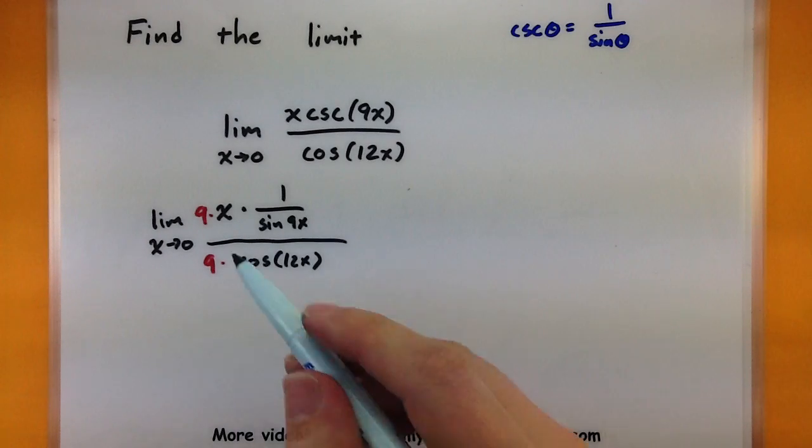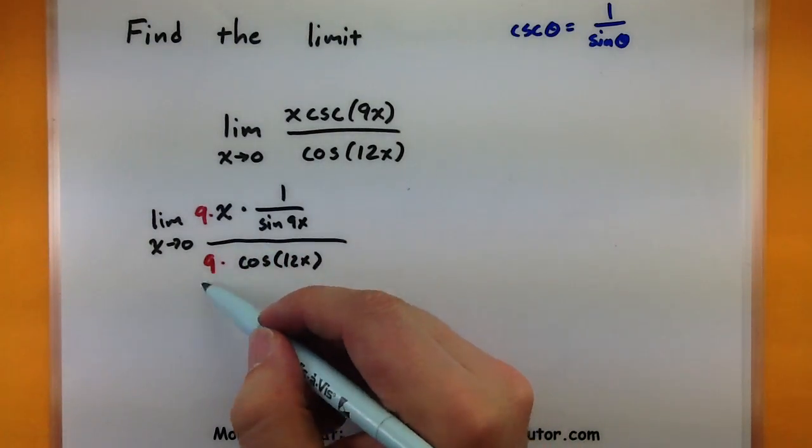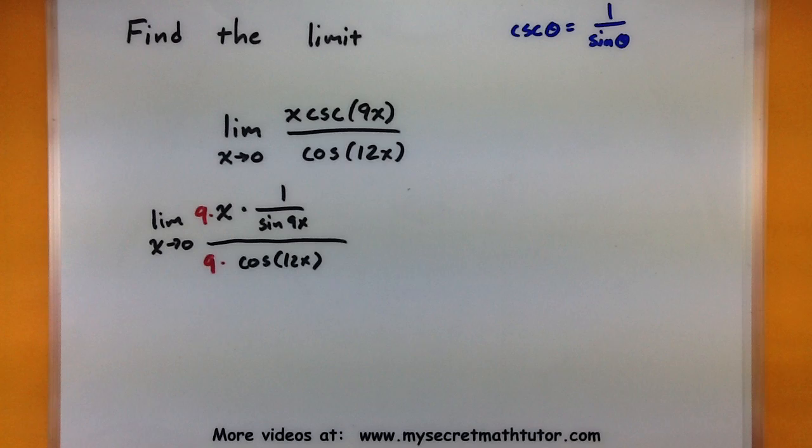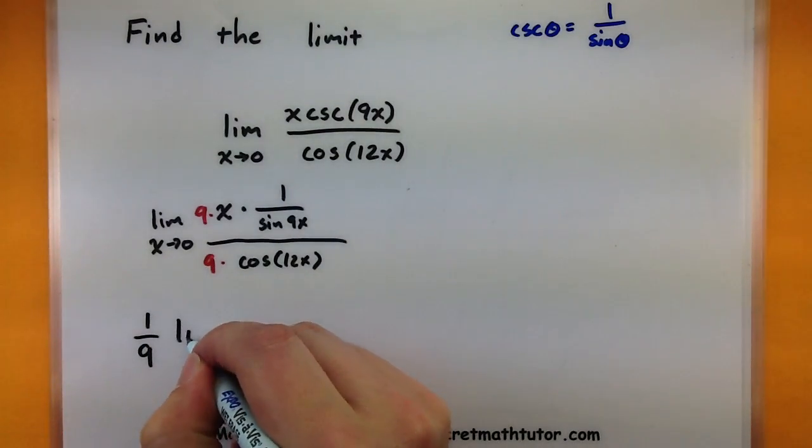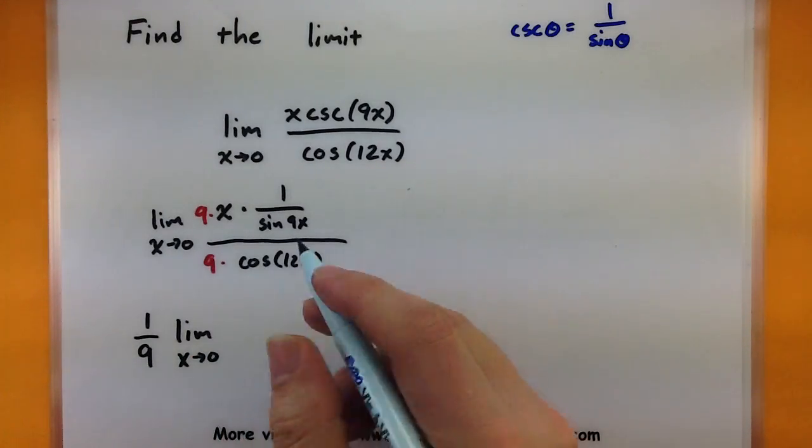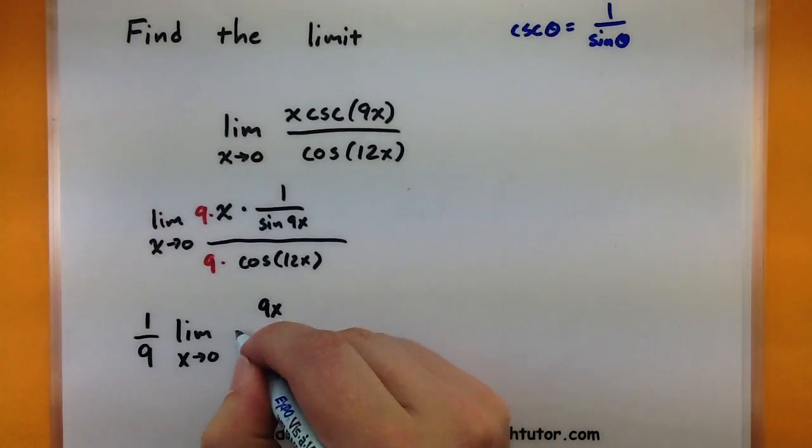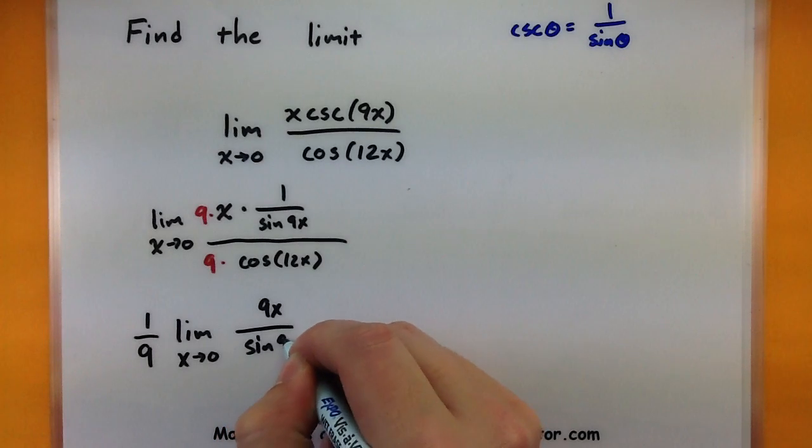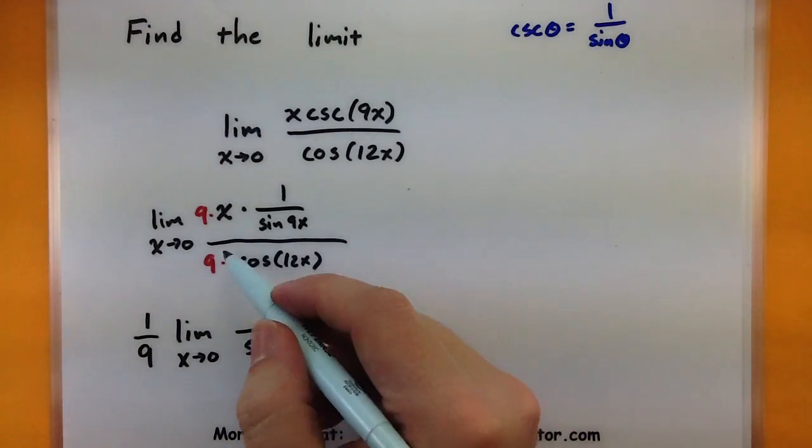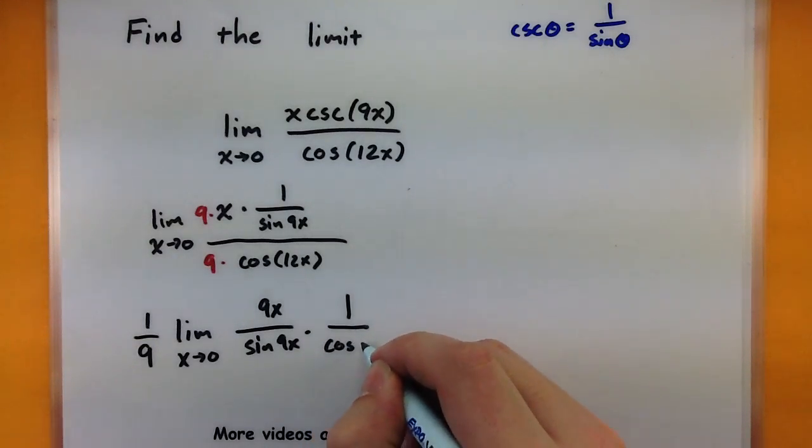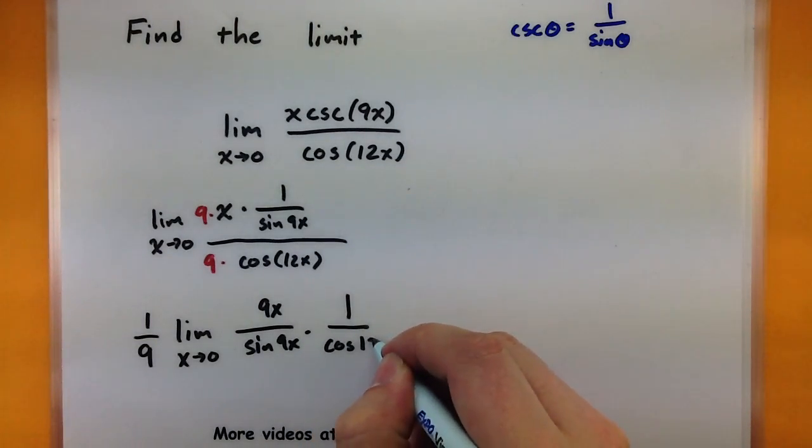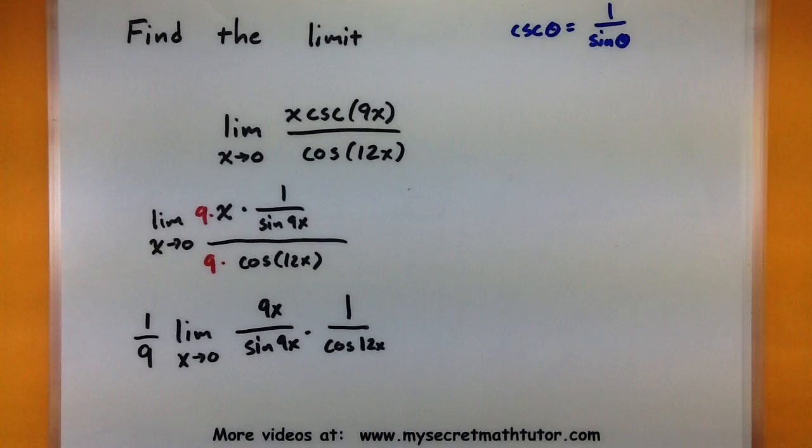And we can do that by multiplying the top and the bottom of our large fraction by 9. So let's rewrite this. We want the 9x on top. This 9 on the bottom, we'll go ahead and move that out. So there's still a 9 on the bottom. So we have 9x all over sine of 9x. And let's see, this cosine part, cosine of 12x. Not bad, not bad at all.